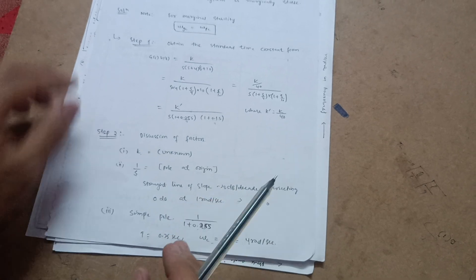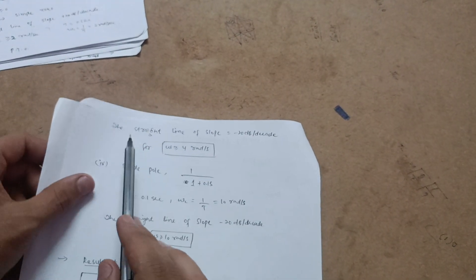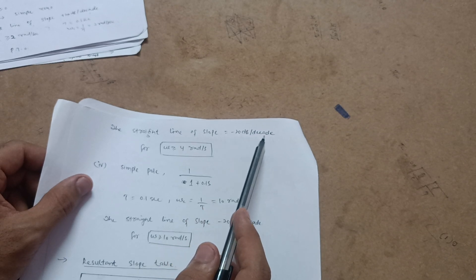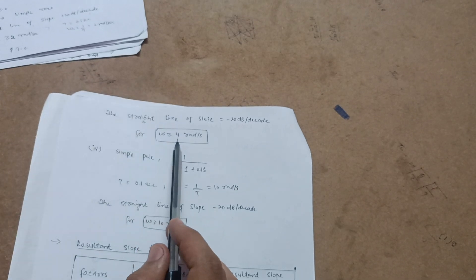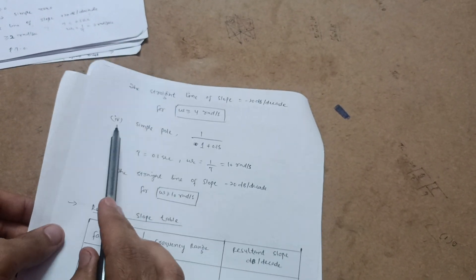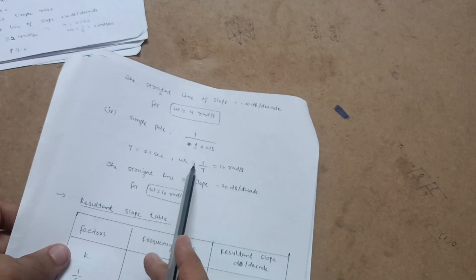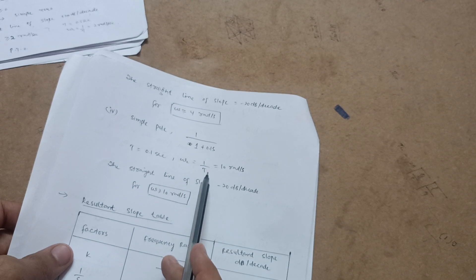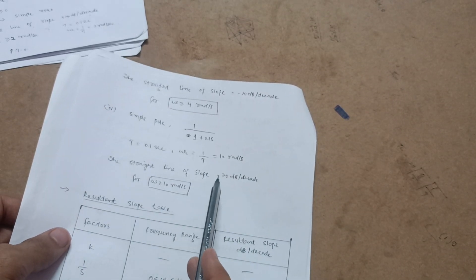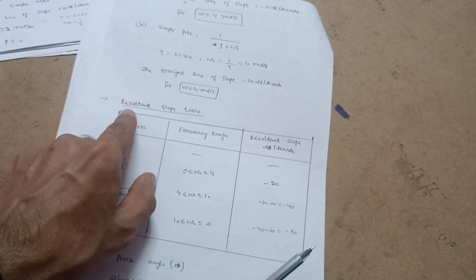The last term is 1/(1+0.1s), another simple pole. Here T = 0.1, so ωc = 1/0.1 = 10 radians per second. The slope is −20 dB/decade for ω ≥ 10 rad/s. Now you have to make a resultant slope table with columns: factor, frequency range, and resultant slope in dB/decade.